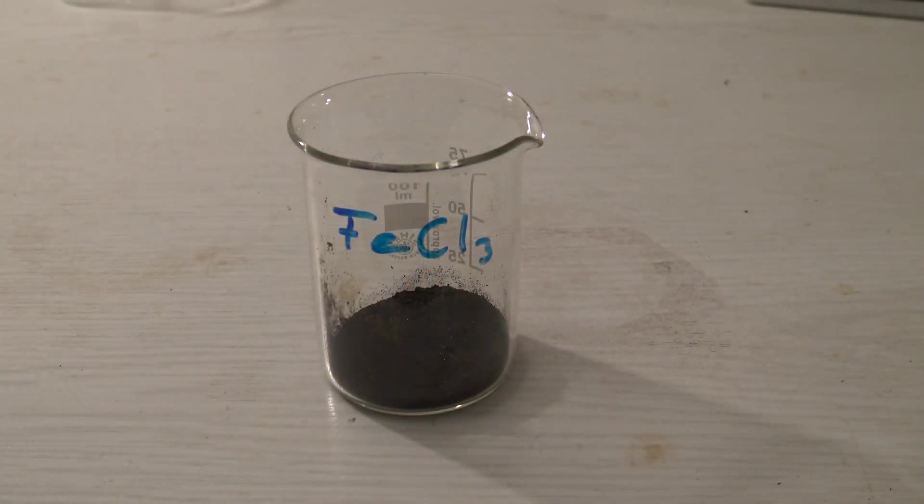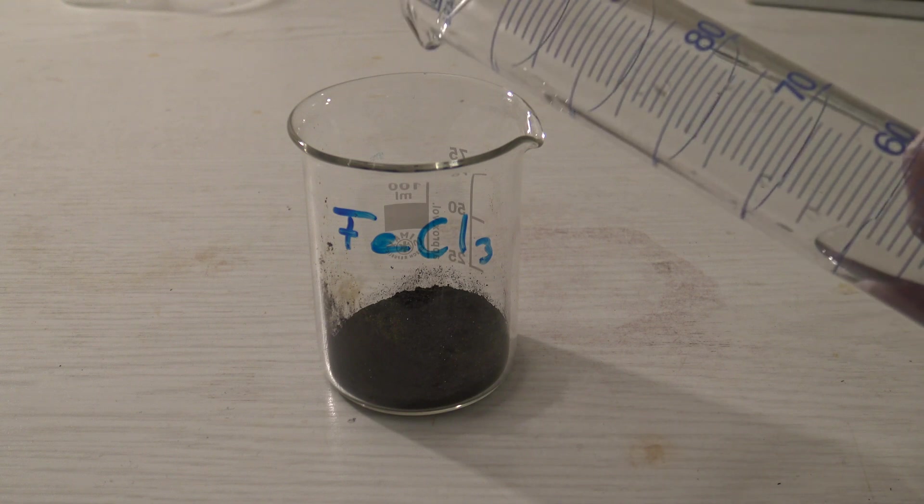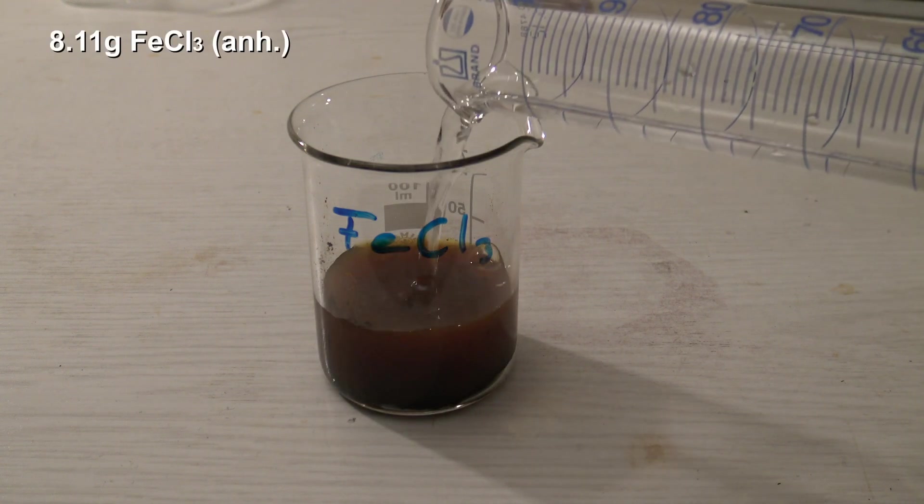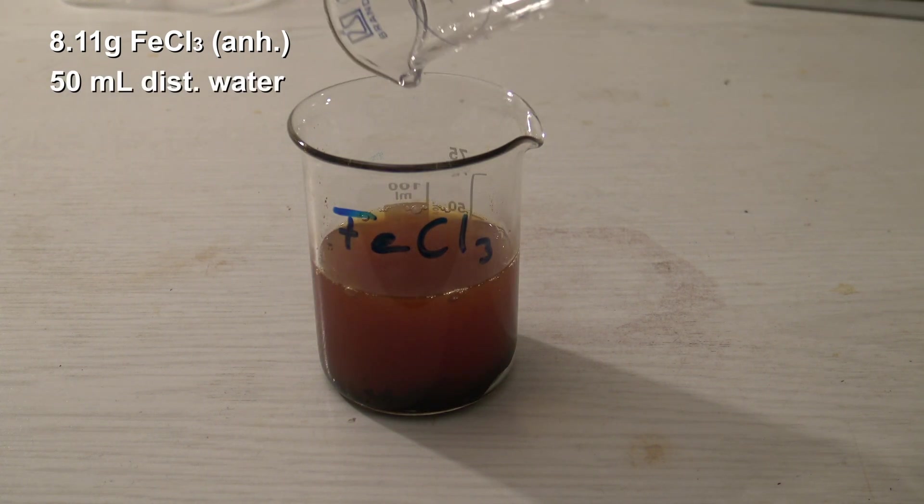For the next experiment two solutions were prepared. For the first one, 8.11 grams of anhydrous iron(III) chloride were dissolved in 50 milliliters of distilled water.